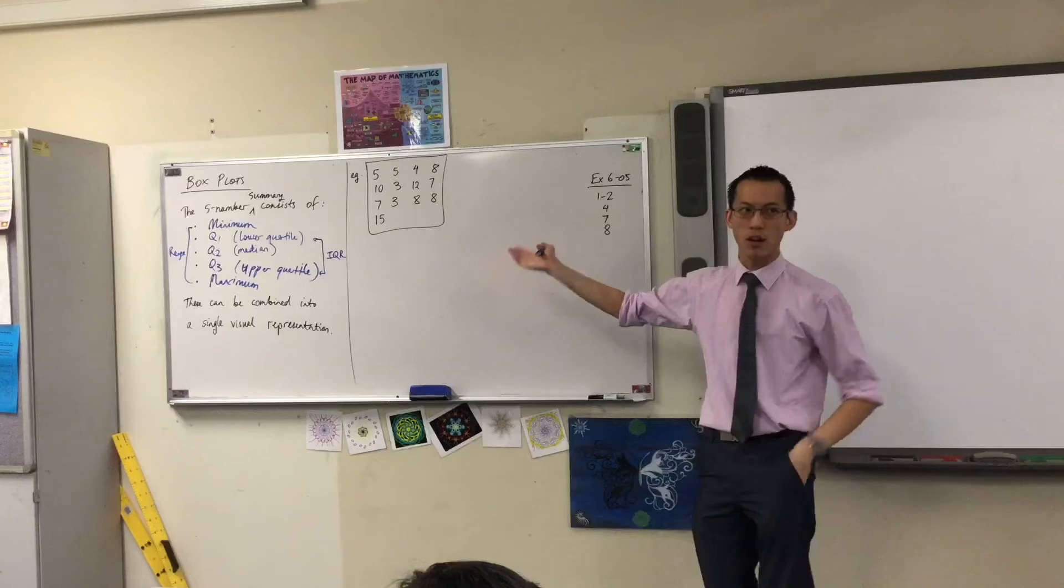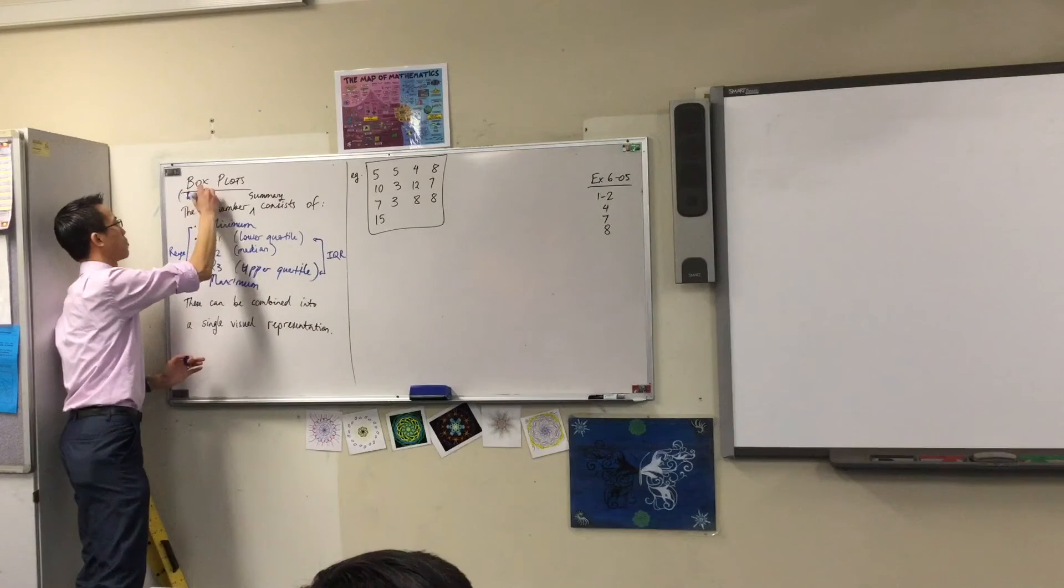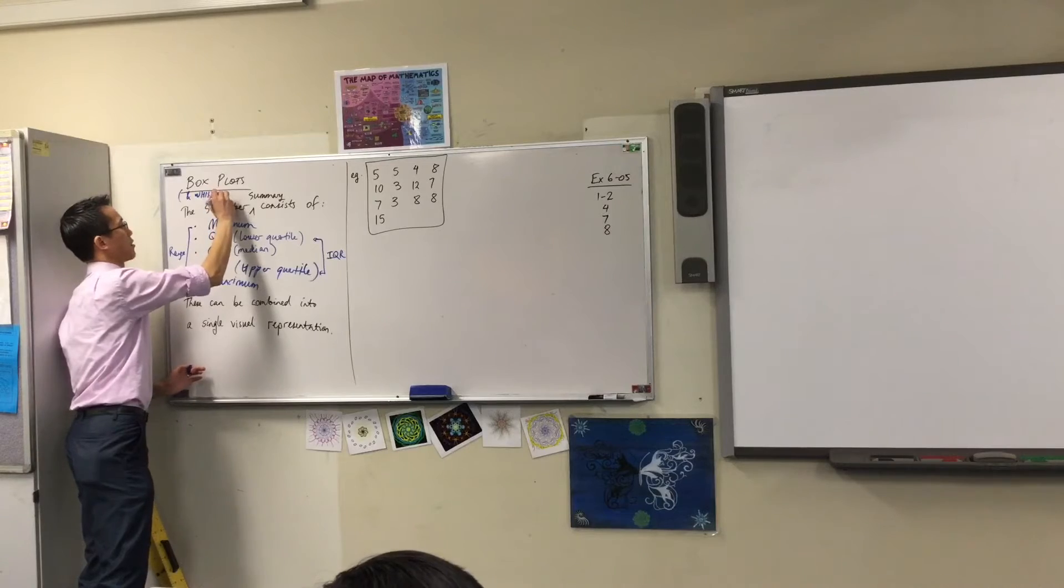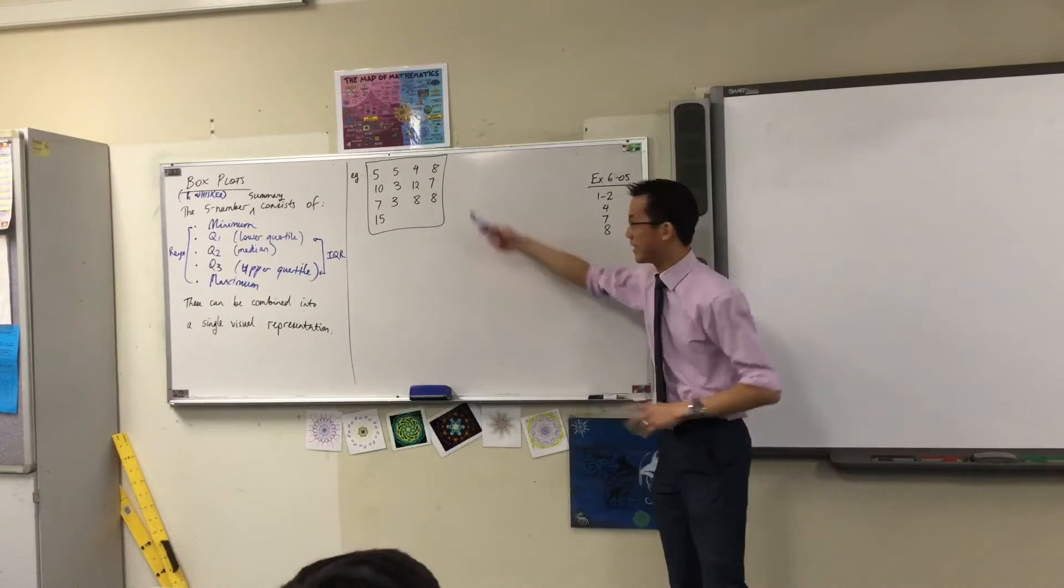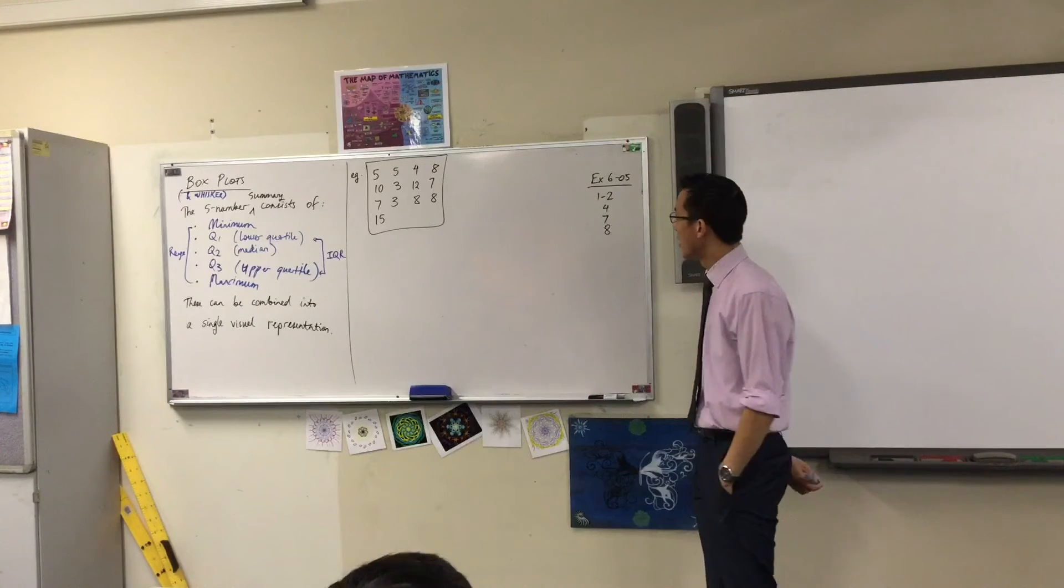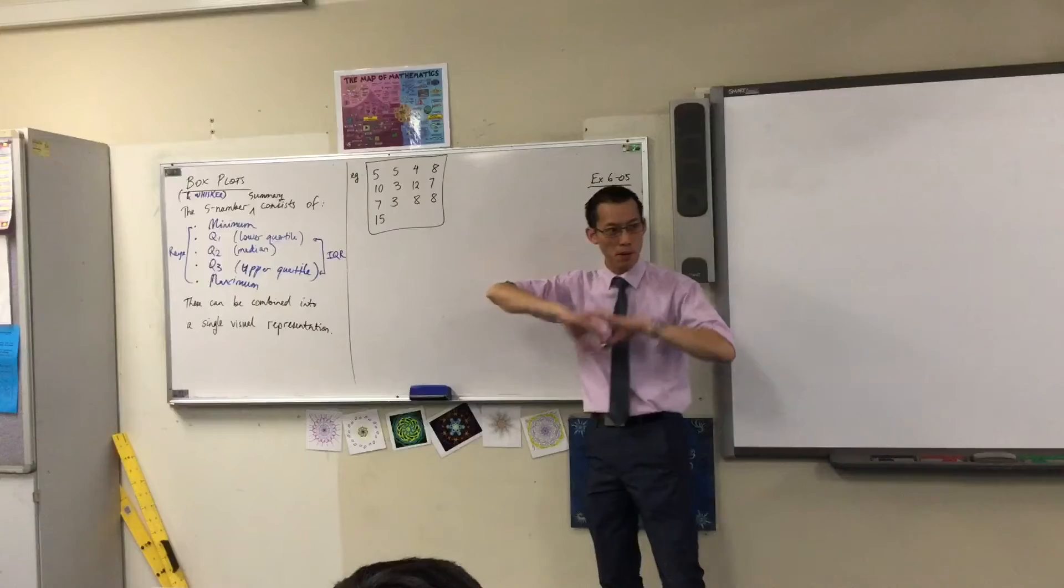So you draw a picture and we call that visual representation, the picture, a box plot or a box and whisker plot. So let's remember, how do we draw one of these things? Well, here's a set of data.